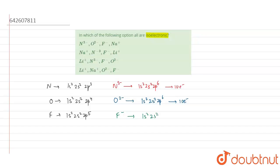the configuration is 1s² 2s² 2p⁶, which has 10 electrons.